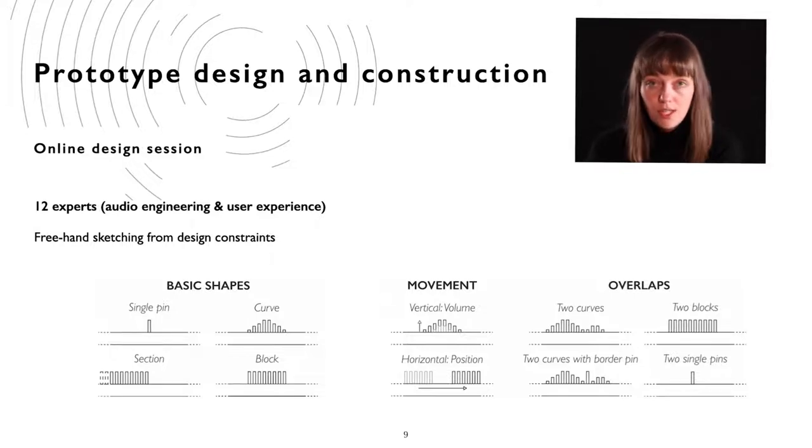To develop types of shapes and connect movements to specific interactions, we conducted a design session with 12 experts with experience with sound zone systems. From sketching sessions, we defined four basic shapes shown to the left in the slide. We also defined four ways of displaying overlapping sound zones and two types of movement. Vertical, which we hypothesized would be useful for displaying volume changes, and horizontal movement for displaying position changes. A final takeaway from the session was that volume and size properties should be considered as one, since when you increase the volume, you also increase the sound zone area.